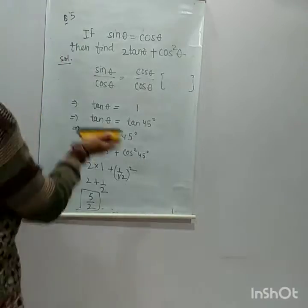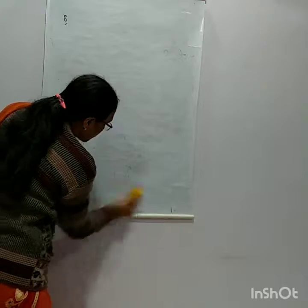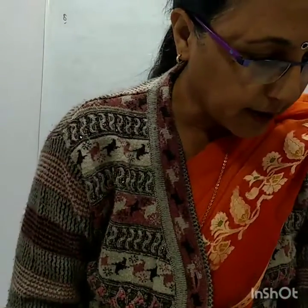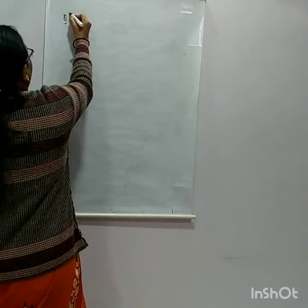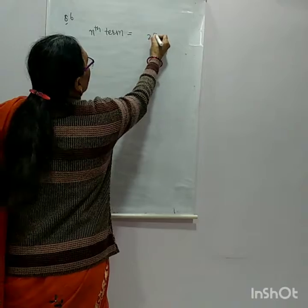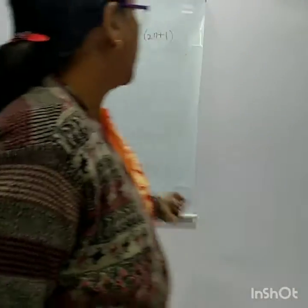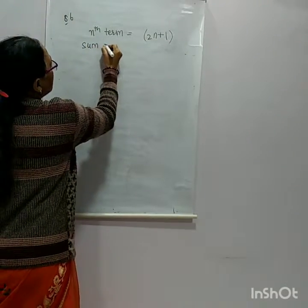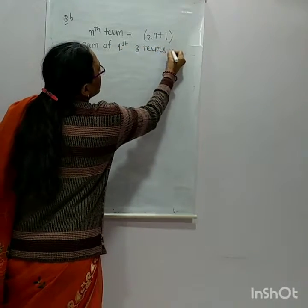Now we move to the next question. If the Nth term of an AP is given as 2n + 1, what is the sum of its first 3 terms?